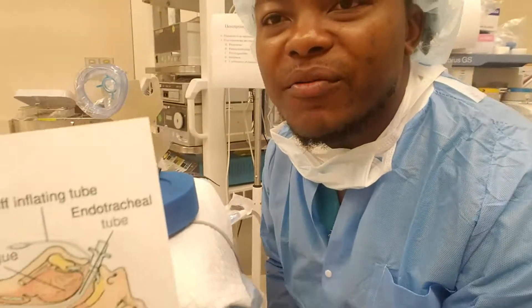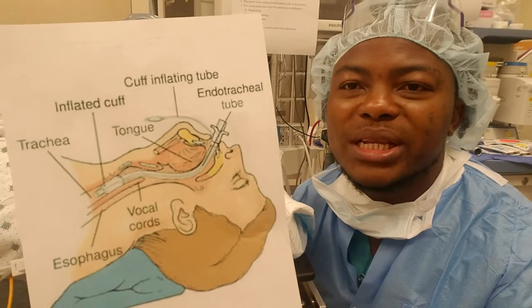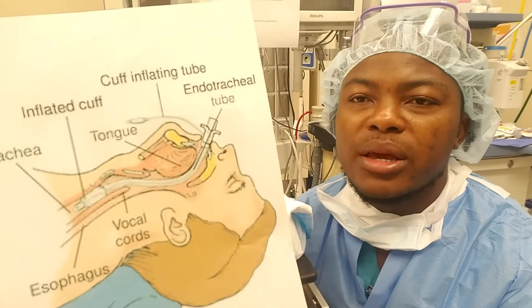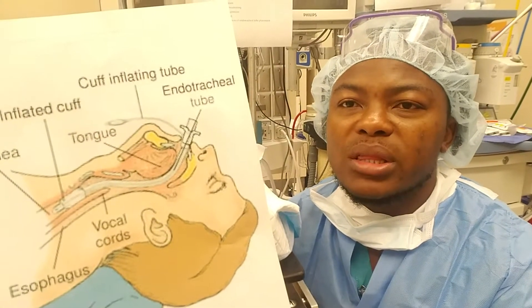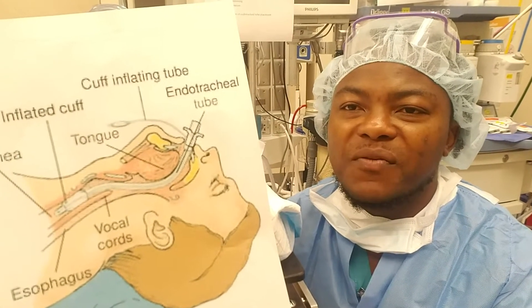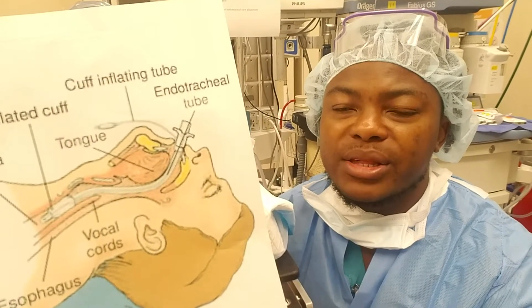Endotracheal intubation is a placement of an endotracheal tube through the glottic opening. This is the anatomy of the airway — this is what we are trying to achieve: placing the tube in the oropharynx, which will then go right into the glottic opening. It will be secured there and inflated, which holds it in place. The objectives for the learners: at the end of this video, learners will be able to list the components of endotracheal intubation and describe the steps of endotracheal intubation.